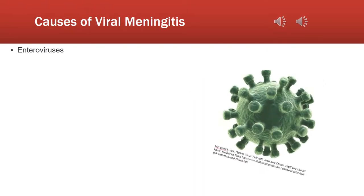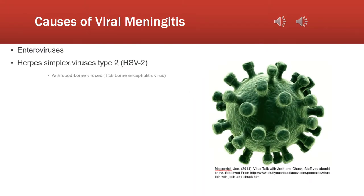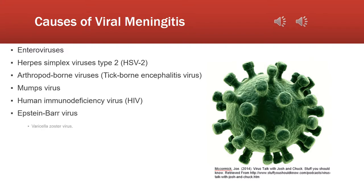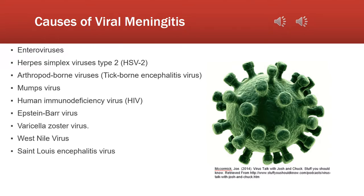Viral meningitis can be caused by the infection of many viruses, some of which include the herpes simplex virus, the varicella zoster virus, arthropod-borne viruses, the mumps virus, HIV, and the Epstein-Barr virus. The most common cause of viral meningitis among children are non-polio enteroviruses.